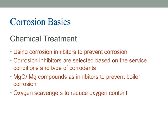Let's talk about chemical treatment as a key strategy in corrosion prevention. One of the main approaches is using corrosion inhibitors, carefully selected based on the specific service conditions and the type of corrodents involved. For example, magnesium oxide and magnesium compounds are often used as inhibitors to prevent corrosion in boilers, helping by forming protective films that reduce the metal's exposure to corrosive agents. Another important chemical treatment involves oxygen scavengers, which work to lower the oxygen content in the system. Since oxygen is a major driver of corrosion, especially in water systems, removing it significantly slows down the corrosion process. Overall, chemical treatment is a vital part of corrosion management strategy, tailored to the particular environment to effectively minimize damage and extend equipment life.